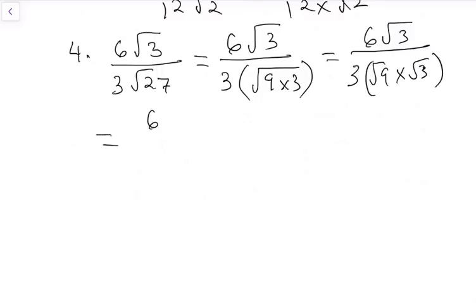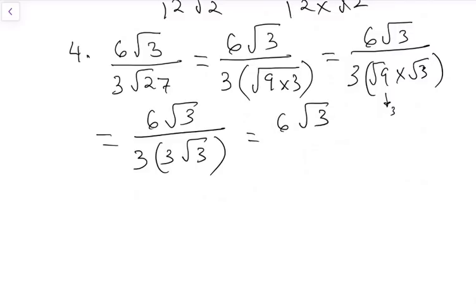We have 6 root 3 over 3 into square root of 9 multiplied by square root of 3. This brings us to 6 root 3 over 3 into 3 root 3 because the square root of 9 is 3.